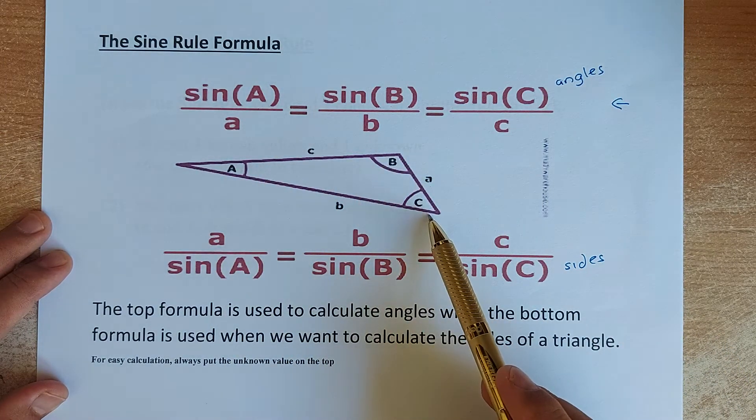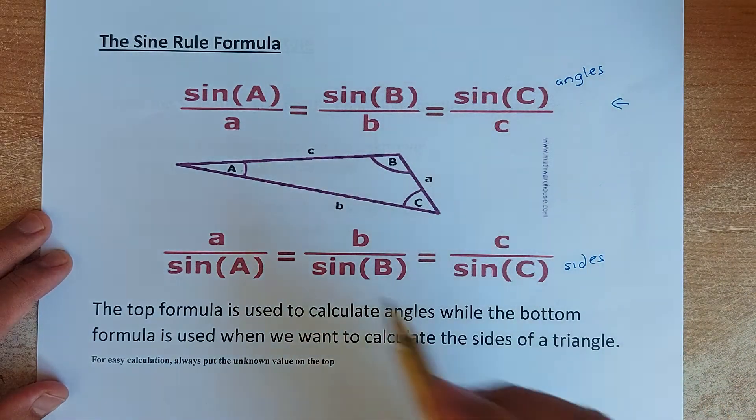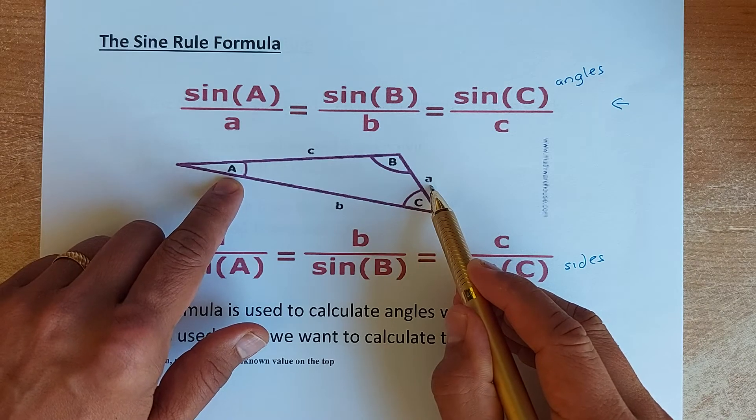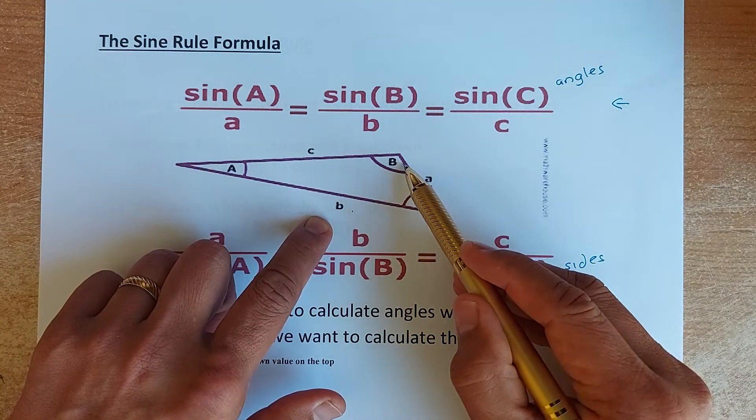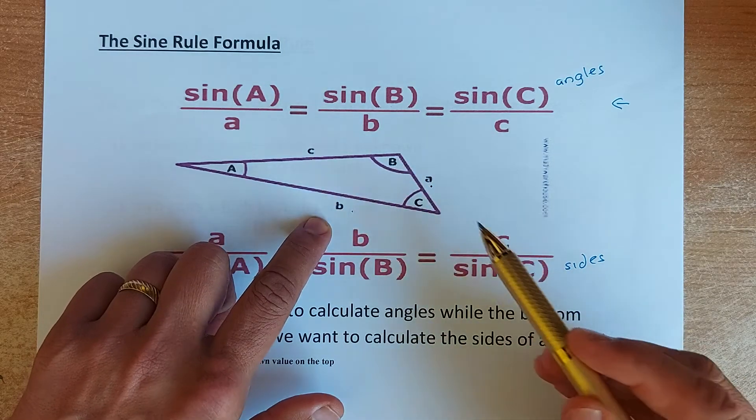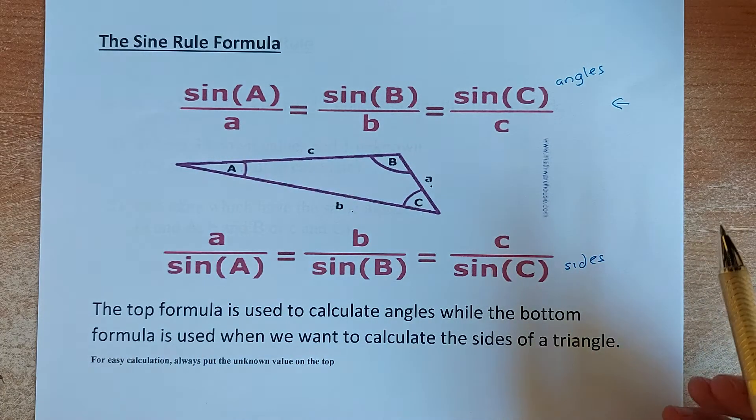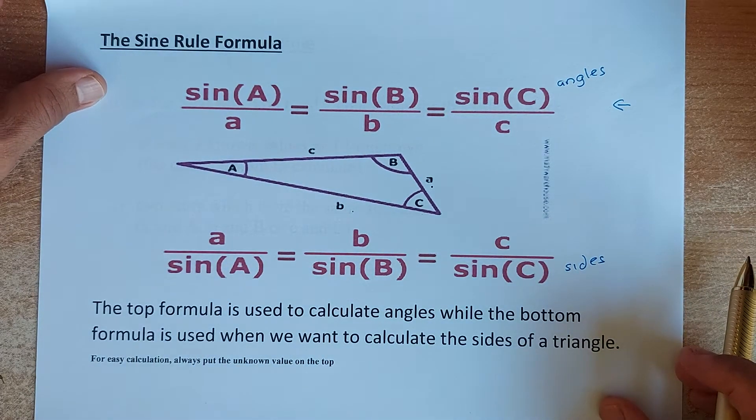And the lowercase a, b, and c, they are the sides. And technically, the side opposite the angle A is the lowercase a. The side opposite the angle B is lowercase b. And the side opposite angle C is the lowercase c. So it's just the opposite of the angle and that is how you label your triangle.